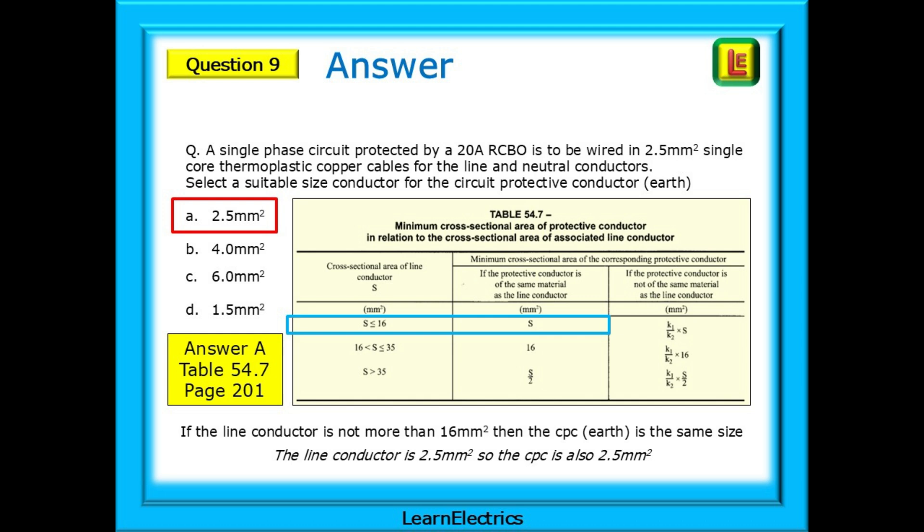The answer is choice A, 2.5 square millimetre single conductor. This is found by using table 54.7 on page 201. If the line conductor is not more than 16 square millimetres, then the CPC or earth is the same size as the line conductor.